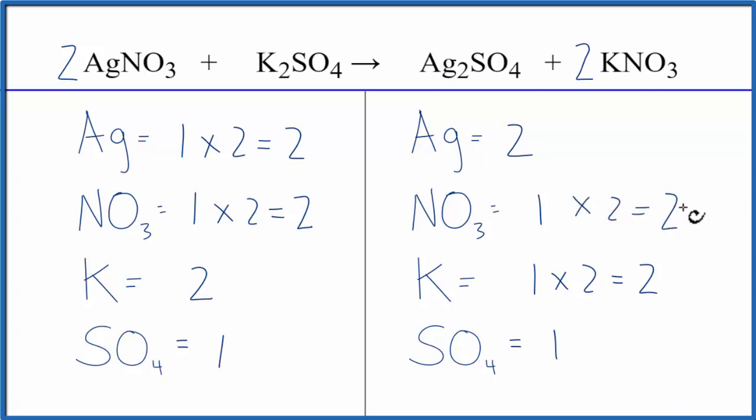So when we have a polyatomic ion on the reactant side and on the product, count it as one item. It'll make the balancing a lot easier. This is Dr. B with the balanced equation for AgNO3 plus K2SO4. Thanks for watching.